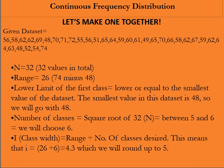Now let's make a grouped frequency distribution table. Have a look at the dataset. It has 32 values, hence n is equal to 32. The range is the highest data point which is 74 minus the lowest data point which is 48 and hence the range is 26.